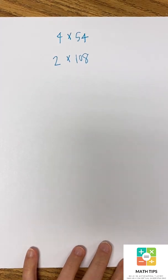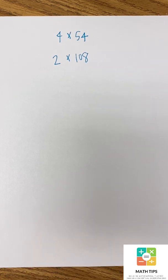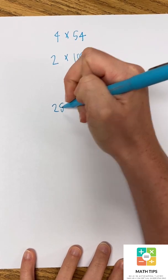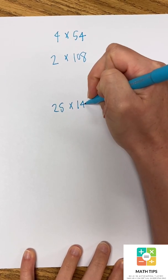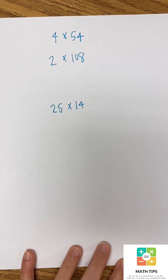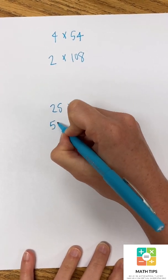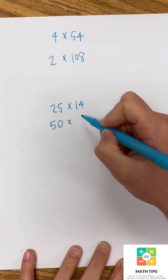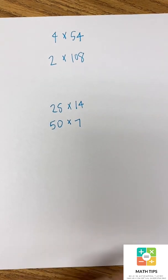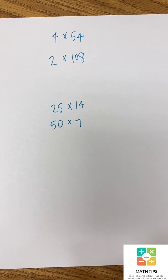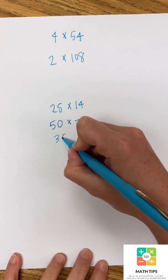So that's an example of doubling and halving. Another good one would be 25 times 14. So students would see 25, I can double 25 and get 50 and then half 14 to get 7 and that makes this problem much simpler to solve. So 50 times 7 is 350.